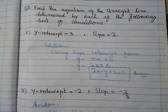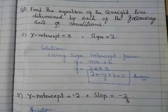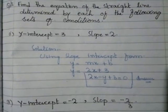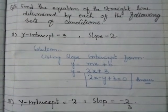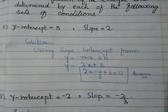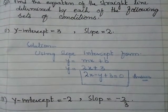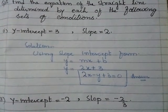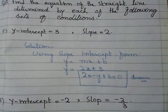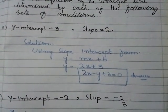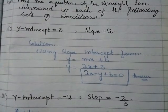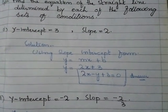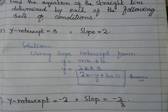Question number 1: y-intercept is equal to 3 and slope is equal to 2. As we know, the y-intercept is denoted by B and slope is denoted by M. Solution: using slope-intercept form, y = Mx + B. y = 2x + 3. Rearranging: 2x − y + 3 = 0. This is our required equation of a straight line.